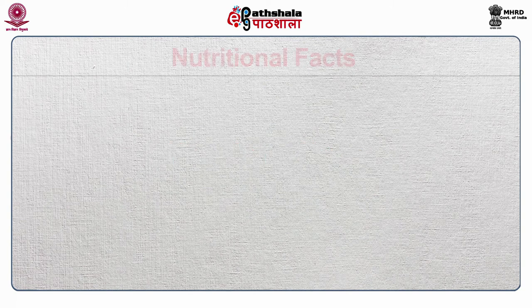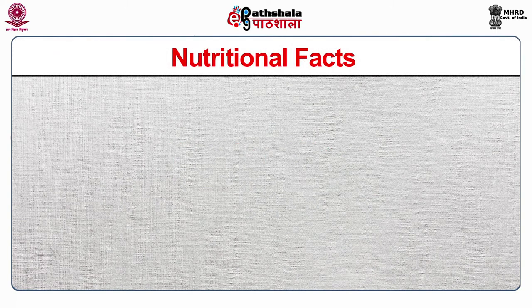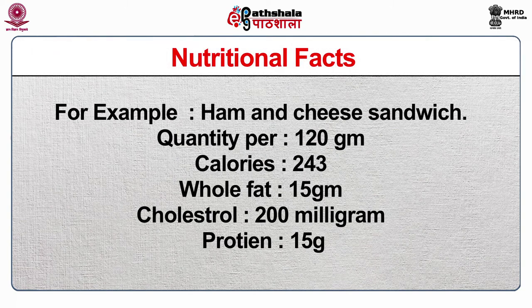Nutritional factors: for example, a ham and cheese sandwich, quantity per 120 grams — calories 243, whole wheat 15 grams, cholesterol 200 milligrams, protein 15 grams. A sandwich is a collective portion. Temperature may be hot or cold; texture is crusty, chewy, fried, wet or dry.